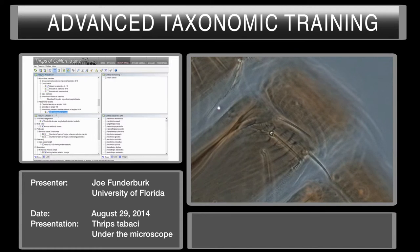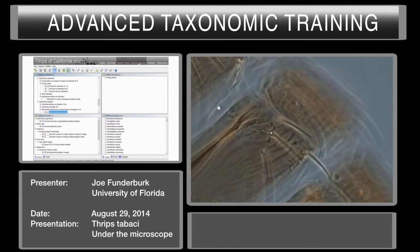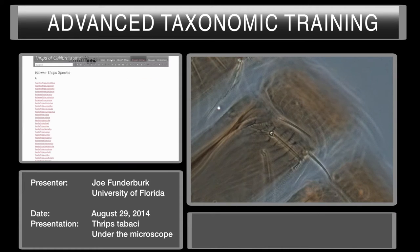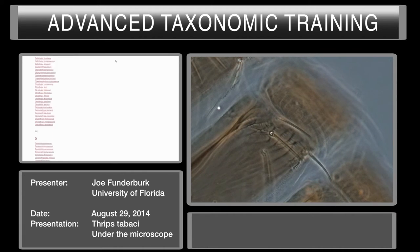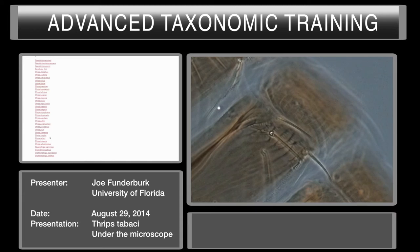What I usually do when identifying a species is use another feature in this key which is extremely useful — you'll see it says 'Browse Species.' I'm going to click on that, then browse species. We had Thrips tabaci, so I'll click on the T and carry down to all of the species in the key, and I'm going to click directly on Thrips tabaci.